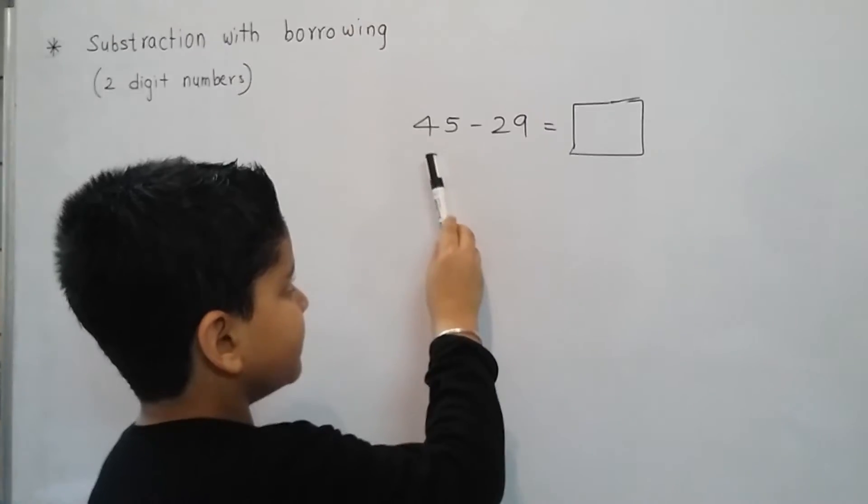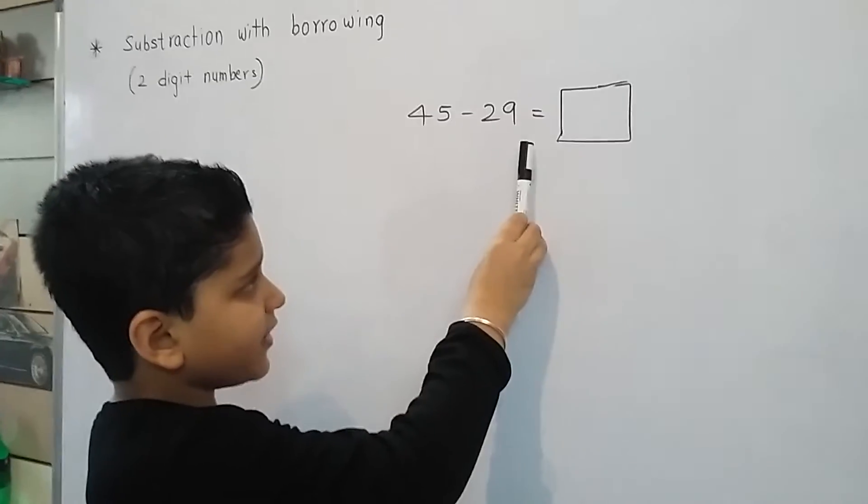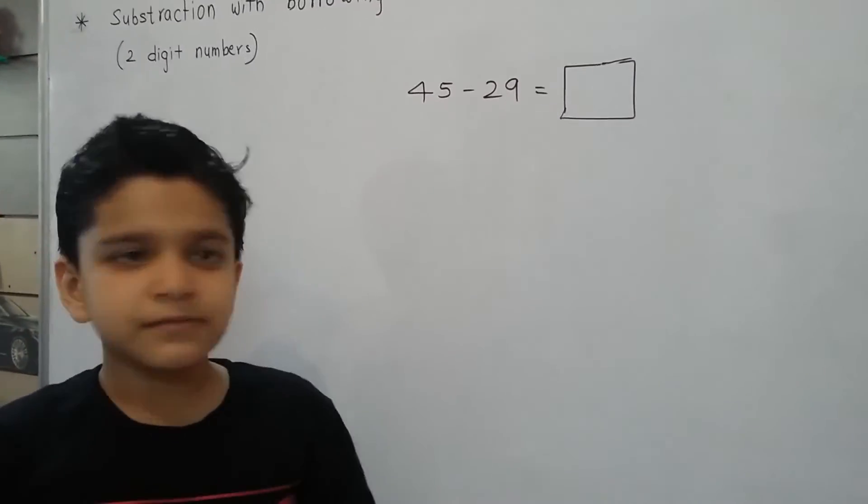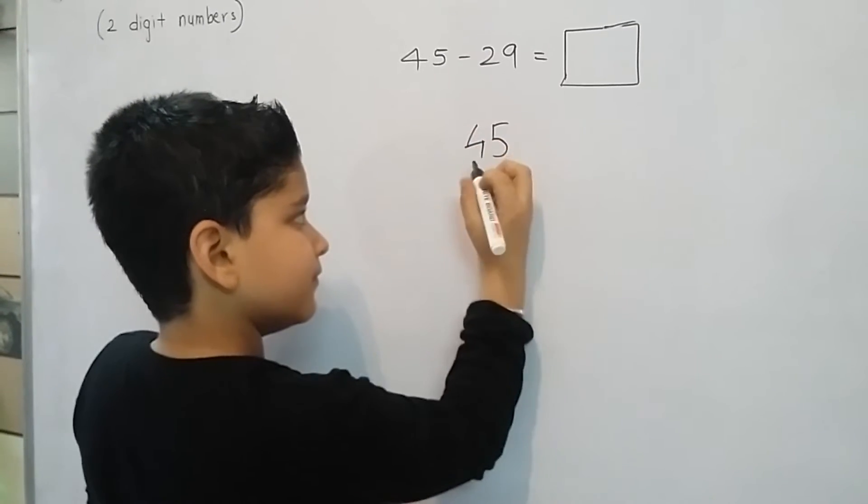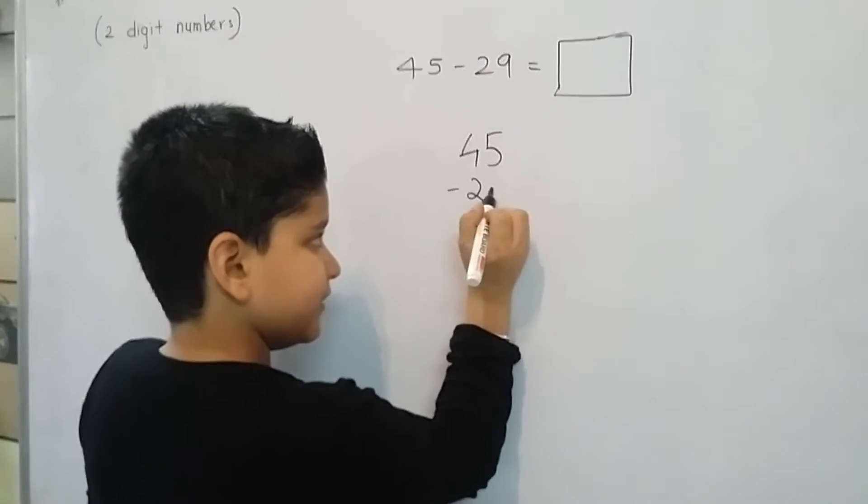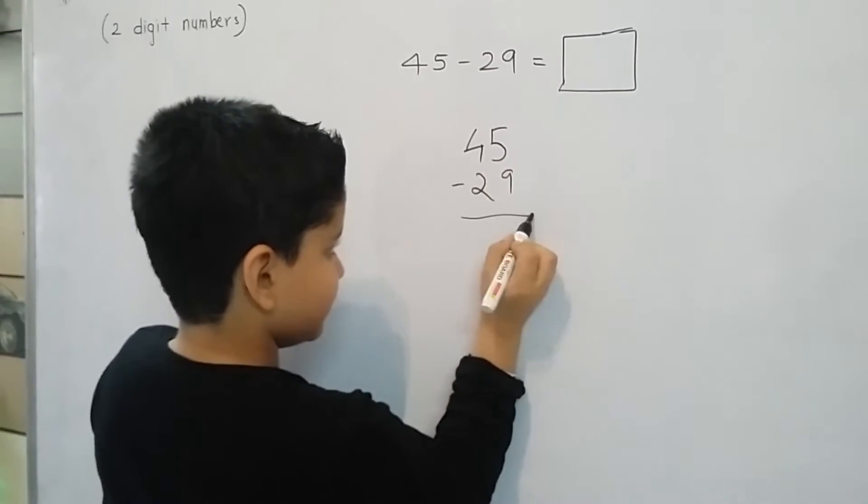Let's start with this sum. 45 minus 29 equals to box. First I write here 45 minus 29 equals to.